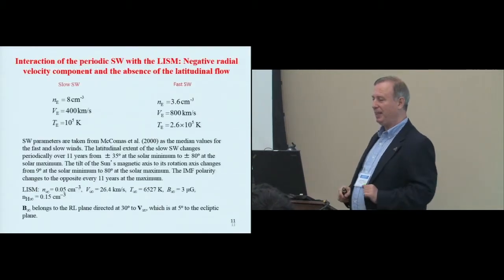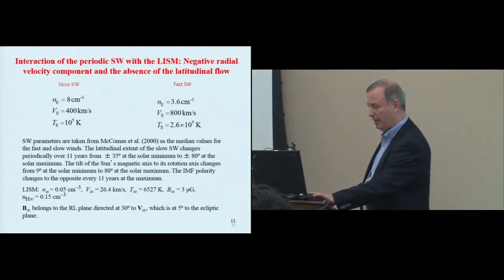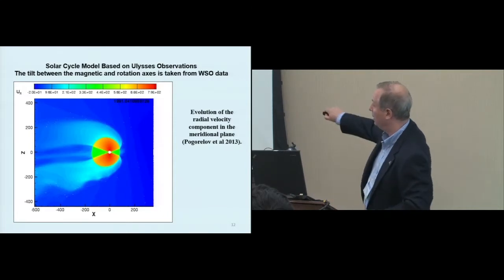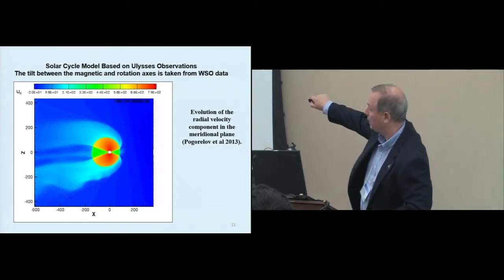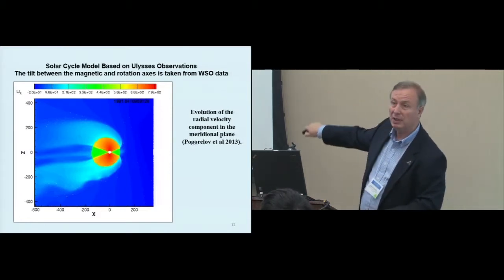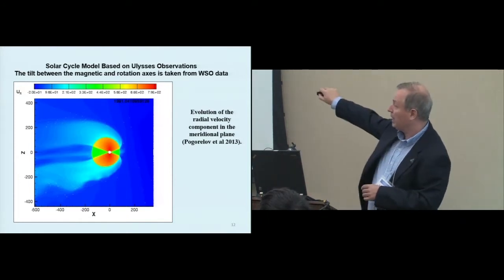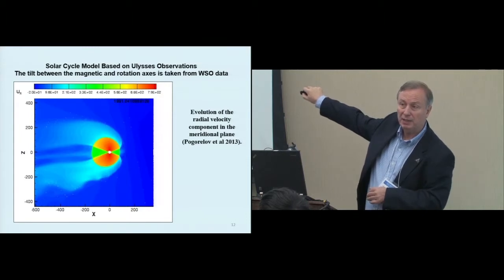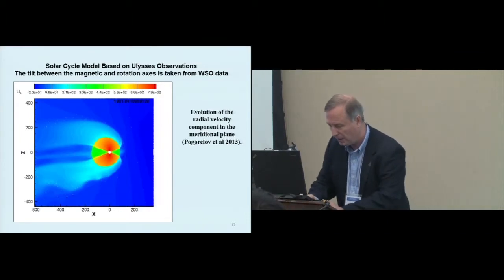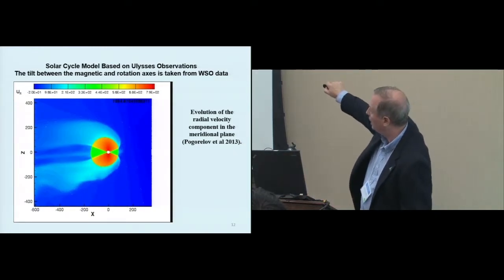First of all, solar wind is not spherically symmetric. I will show you this. This is radial velocity. There is slow wind here and fast wind near the poles. But the latitudinal extent of slow wind is a function of time. Near minimum, it's small and then goes to 90 degrees during solar maxima.